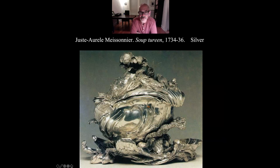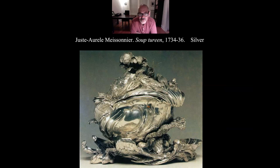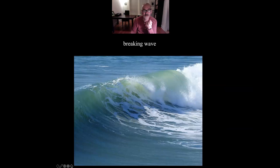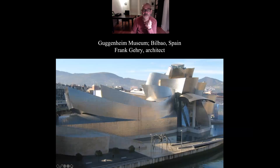Here is an engraving of a Meissen silverware table setting. There is the soup tureen — the container for serving soup. It looks like there's a crayfish crawling on top of it, with leaves and a kind of splash of a wave at the bottom. The whole thing looks like this organic object.